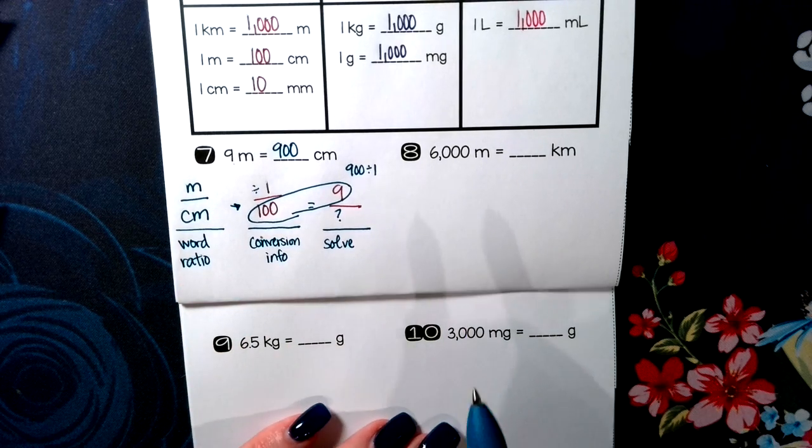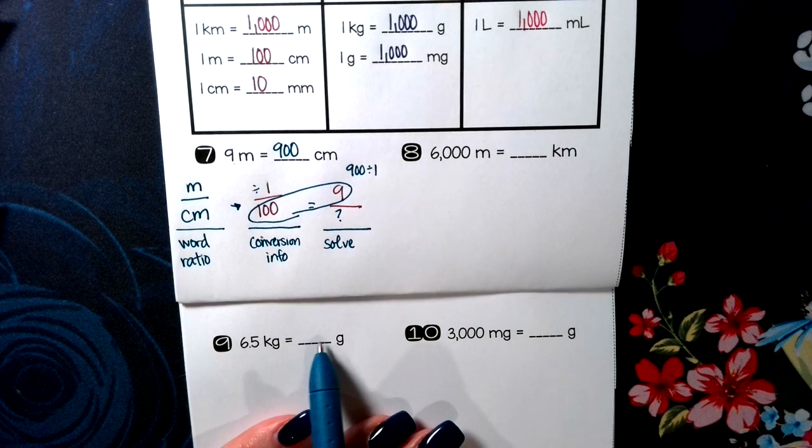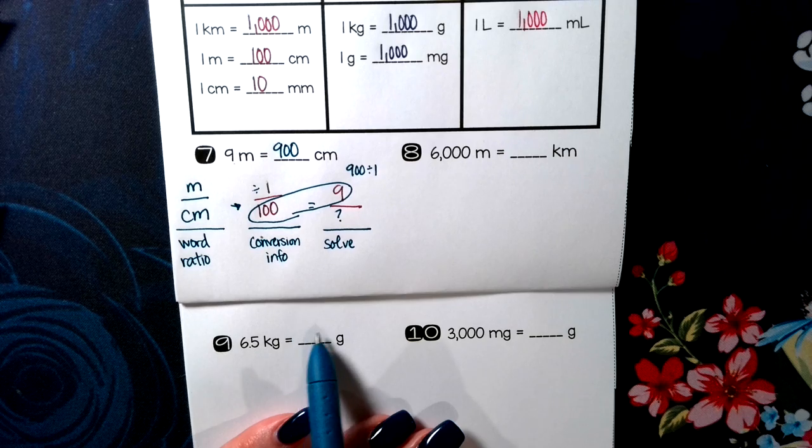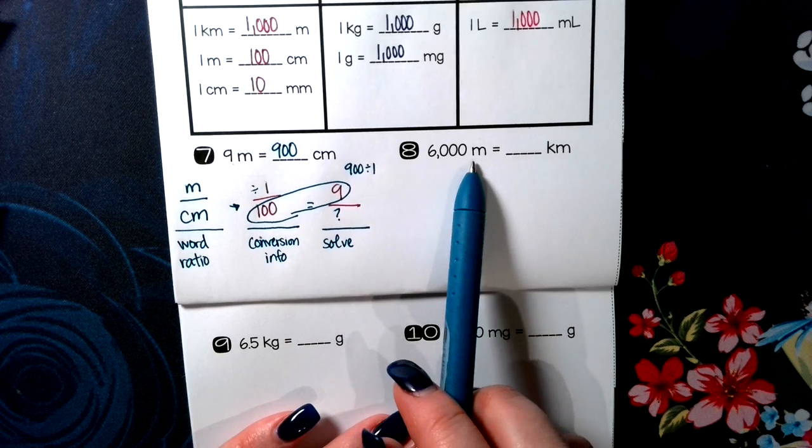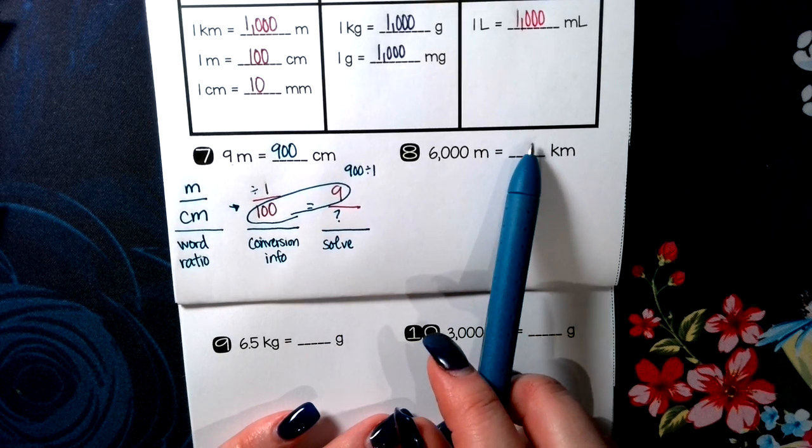The bigger the unit, the smaller the number. The smaller the unit, the smaller the number over here.